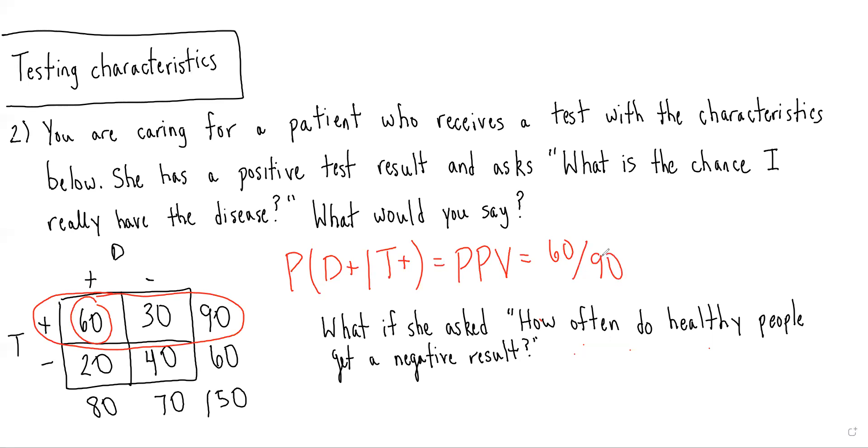The patient could have asked a different question. What if instead she asked, how often do healthy people get a negative result? So in this case, it would be, given the patient is healthy, disease negative, how often do they get a negative result? That would be the probability of having a negative test result given you do not have the disease, which we remember corresponds with specificity, and in this case would be 40 over 70.